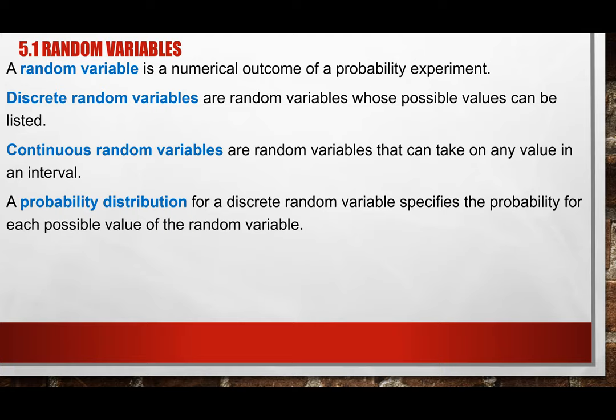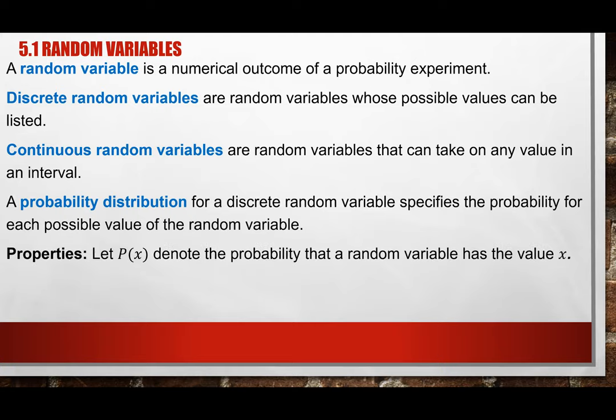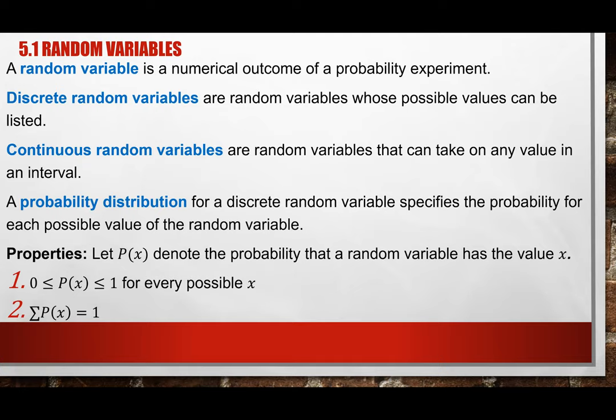Now we have to do a probability distribution. In short, it's basically a table that shows each data value and its probability. If you remember from chapter 3, we discussed relative frequency. Now in chapter 5, that relative frequency becomes a probability distribution — the concept is the same, just different terminology.